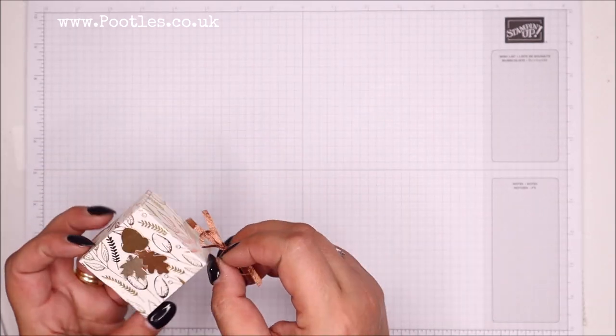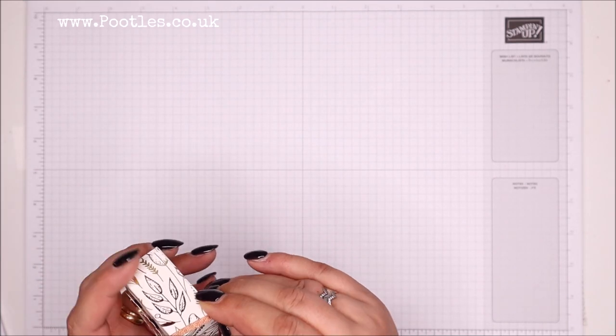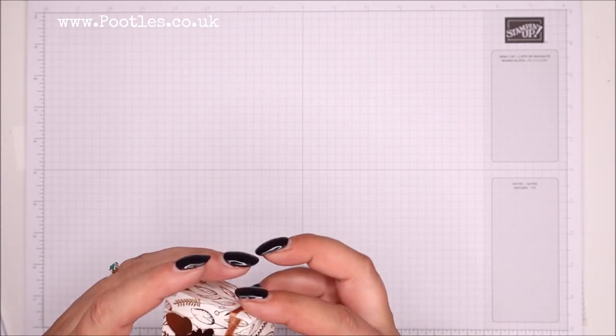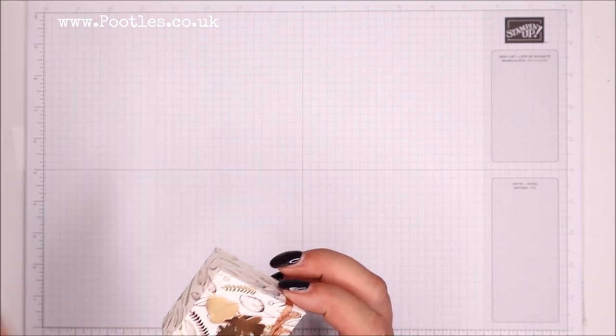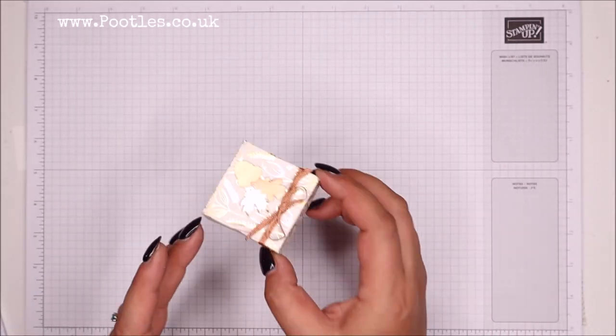It's a little two inch box, so it's two inches by two inches by one inch deep, which is five by five by two and a half centimeters. It's a cute little box and you can get four of these from one sheet of designer series paper.